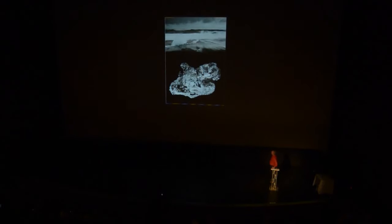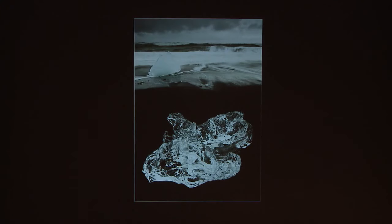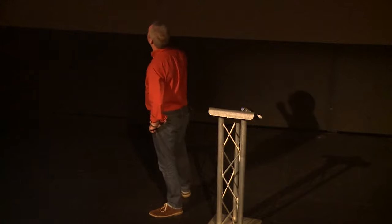Moving on to Jökulsárlón. I've heard people say you're bound to get a good photograph there. No — you'll get a photograph of ice on a beach, but it's actually quite a tricky location to work. It's very monochromatic. This is actually a colour photograph, believe it or not. I had to take my time to get used to working with colour.